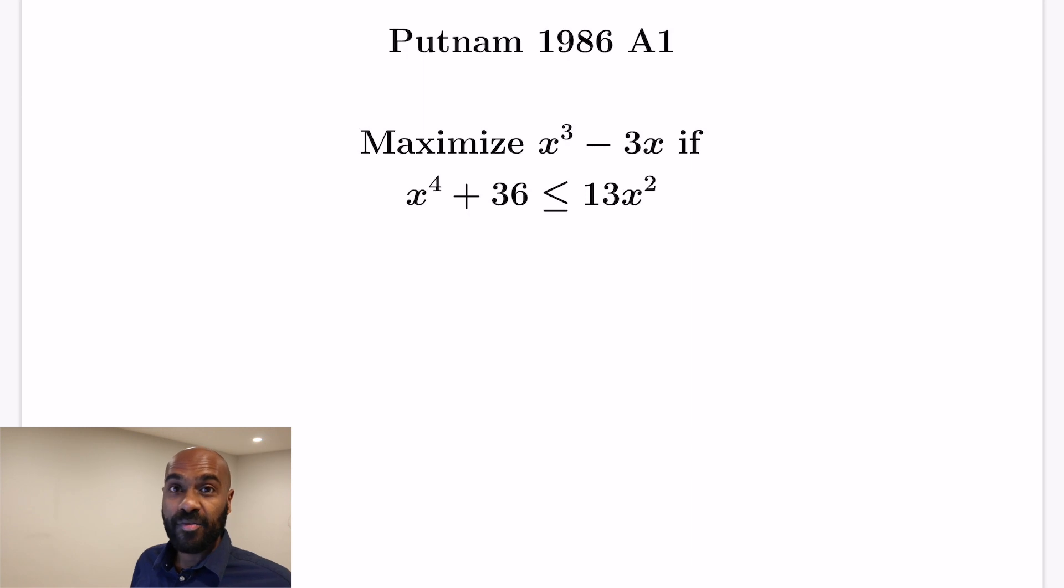And a hint I'll give you if you want to try this problem is to solve that quartic inequality by factoring, and you'll get a range of values for which x has to be. And then you can use standard calculus tools to maximize the function x³ - 3x in those intervals that you end up with that satisfy that inequality that's quartic right over here.